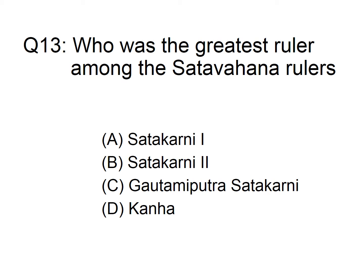Who was the greatest ruler among the Satavahana rulers? Option A: Satakarni I, B: Satakarni II, C: Gautamiputra Satakarni, D: Kanha. The answer is option C, Gautamiputra Satakarni.